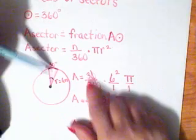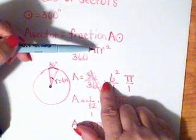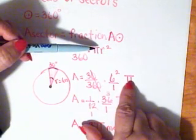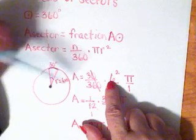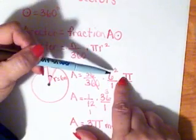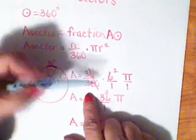So you would have 30 over 360 times radius squared times pi. And I switched the order here so it's 6 squared because the radius is 6, and 6 squared is 36. Now I reduce this so I can cancel my zeros, divide by 10.